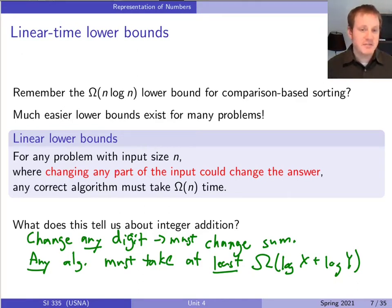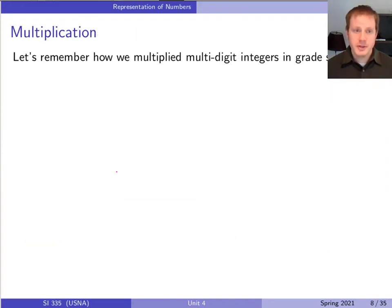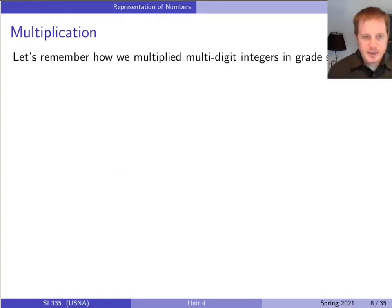Addition is kind of wrapped up. The algorithm we came up with is already the asymptotically optimal one, and we can do subtraction in basically the same way — just change all the digits to negative and do the same thing. What's next is going to be multiplication, and multiplication turns out to be much more interesting — a much richer area of study and investigation.